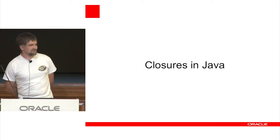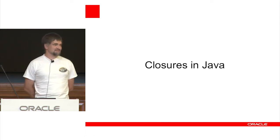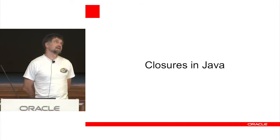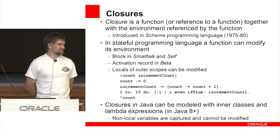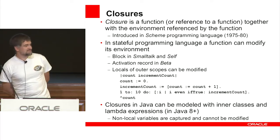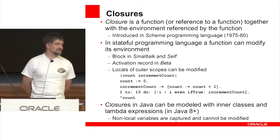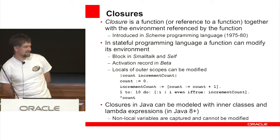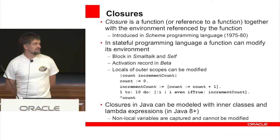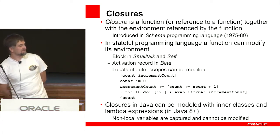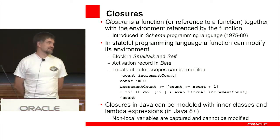That's the end of the introduction to Monty. Now, closures in Java. All these details were necessary as background to the implementation of classless closures in Java. A closure is a function, or reference to a function, together with an environment referenced by that function. It was introduced in Scheme back in 1975-80.